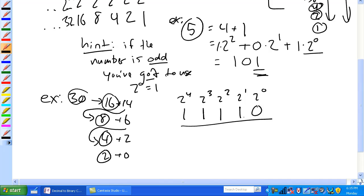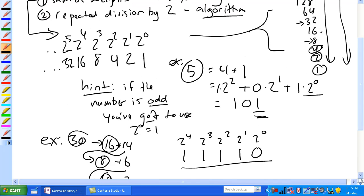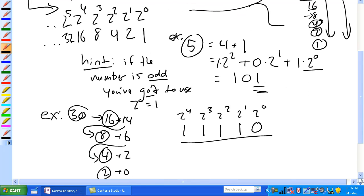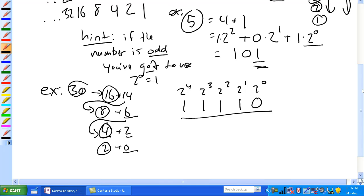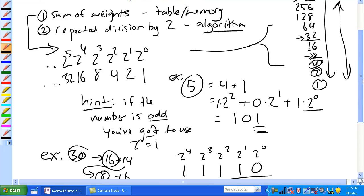Again, sum of the weights is basically just walk through the table. 30, it's not 32, it can't be 32. So, there's got to be a 16, leaving you 14. In 14, there's an 8, leaving you 6. In 6, there's a 4, leaving you 2. In 2, there's a 2, leaving you 0. That's the sum of weights. Just kind of using the table and your memory, adding them up, adding up the binary weights that add up to that number. Not exactly the most useful method for super large numbers.